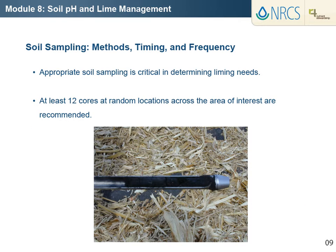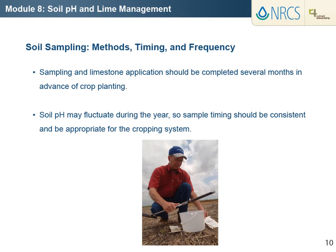Collecting an appropriate soil sample for pH determination is the first and most critical step in determining liming needs. Improper sample collection and handling can lead to incorrect recommendations. While there is some regional variability, it is generally suggested to collect at least 12 cores from the recommended depth at random locations across the area of interest and to place them in a clean, plastic container for shipment to the lab. Timely soil sampling is important because limestone requires time to neutralize soil acidity. Sampling in limestone applications should be completed several months in advance of crop growth to provide time for pH adjustment. In addition, soil pH fluctuates during the year, so soil sampling should be conducted at the same time during the season.